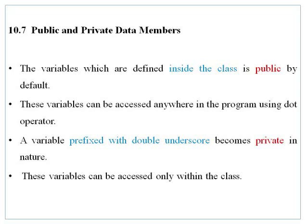We can access data members of a class. The first type is public. Variables defined inside the class are public by default. These public variables can be accessed anywhere in the program using the dot operator, whether inside or outside of the class.